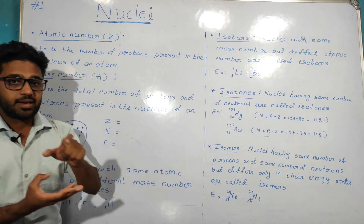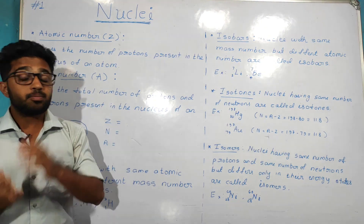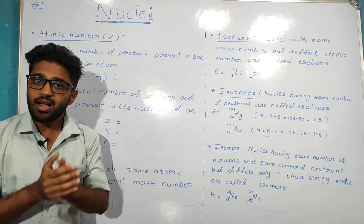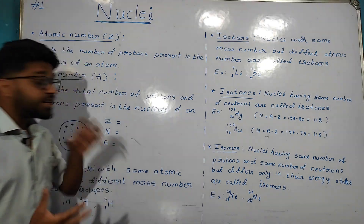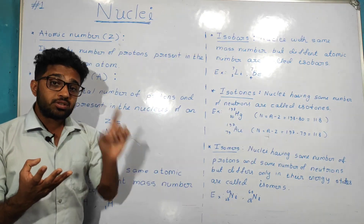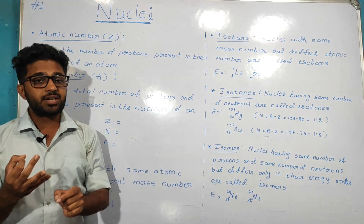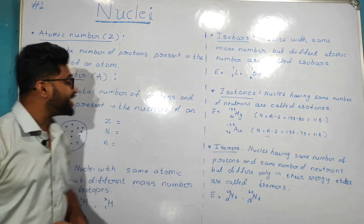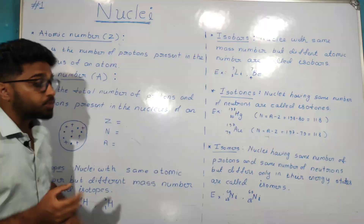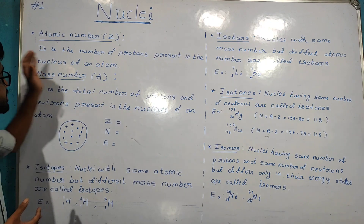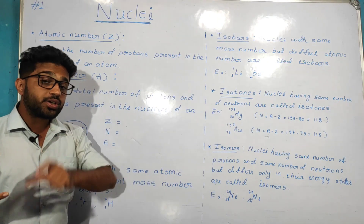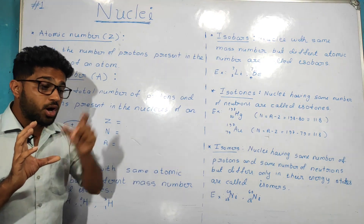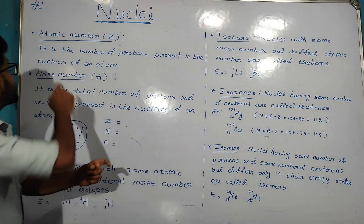The neutron is electrically neutral. The proton is positively charged. The electron is negatively charged. So the mass number A is equal to the total number of protons plus neutrons — that is the atomic number Z plus the number of neutrons N.